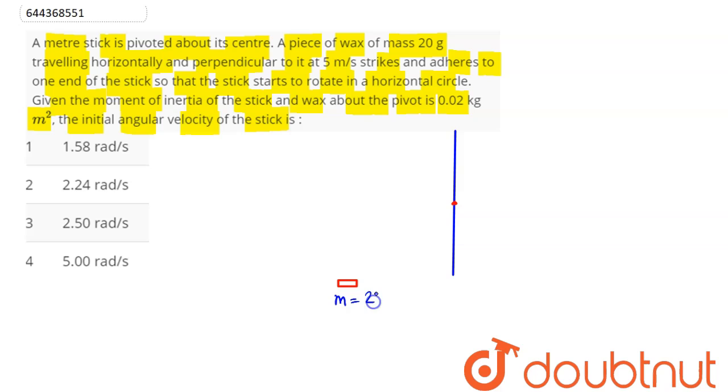This mass is 20 grams and is traveling at 5 meters per second. It hits one end and sticks to it such that the rod rotates in a horizontal circle.